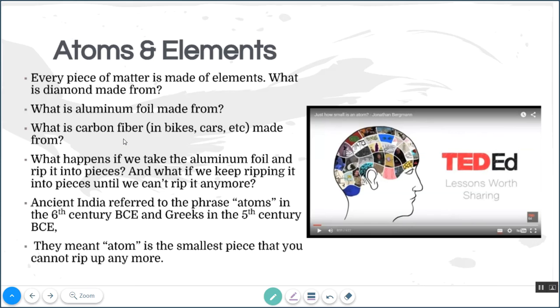The idea of an atom came from ancient India in the sixth century BCE, so that was a long time ago. About a thousand years later, the Greeks came up with the term atom. So they took the idea from ancient India, but the term, the phrase atom, came from the Greeks, and it just means the smallest indivisible piece.